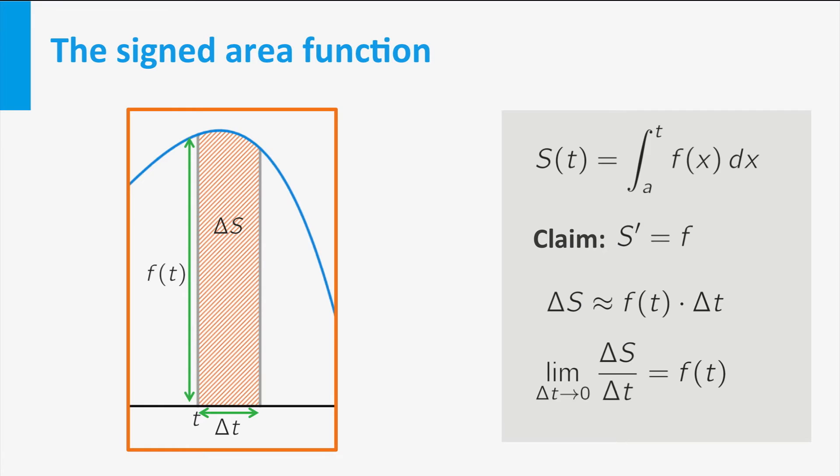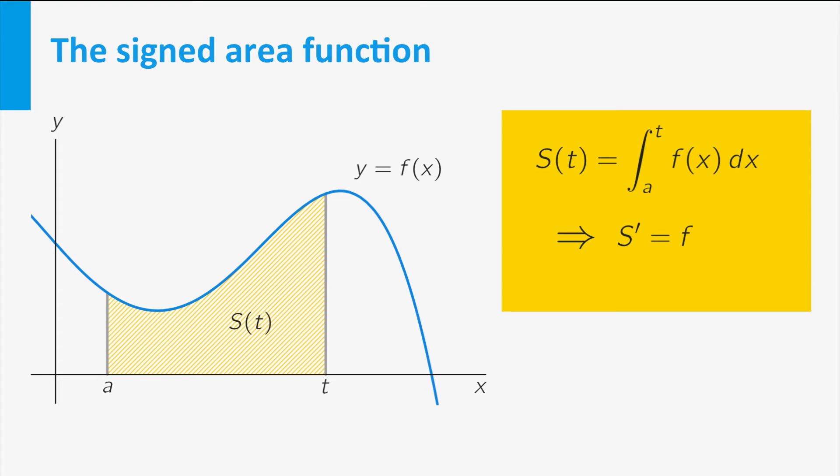Now if you remember the video on differentiation, then you see that the quotient is precisely a difference quotient for the function s, and the limit of the difference quotient is exactly the derivative of s at t. So we see that the derivative of s is precisely f.